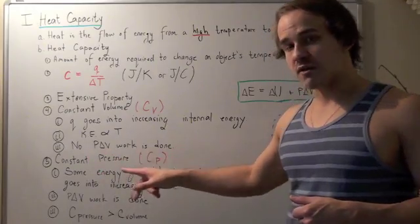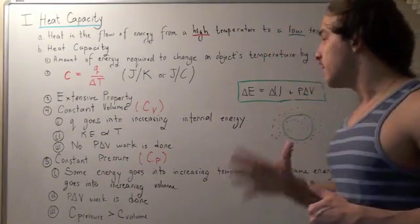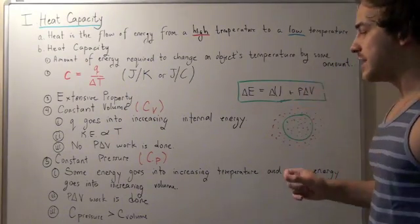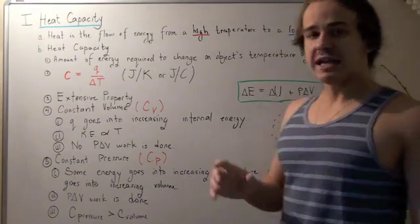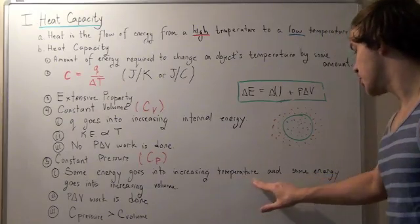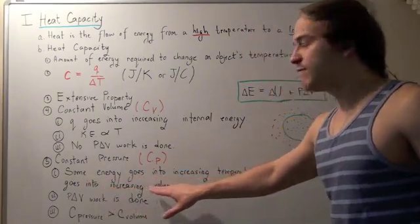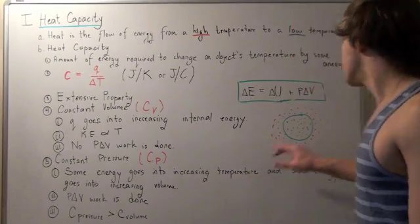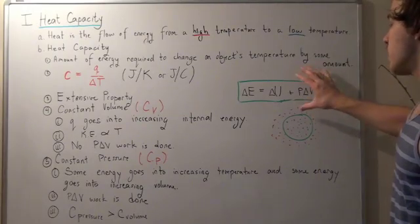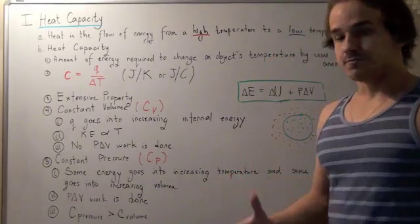At constant pressure, however, according to the ideal gas law, temperature must change as well, and volume must change. So that means some energy goes into increasing temperature, and some energy goes into increasing volume. This PV work term is no longer zero — it exists, and PV work is done.